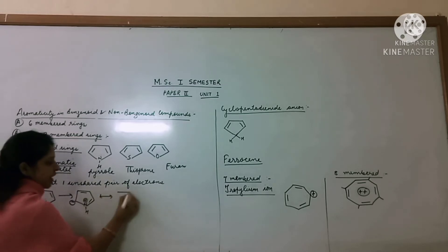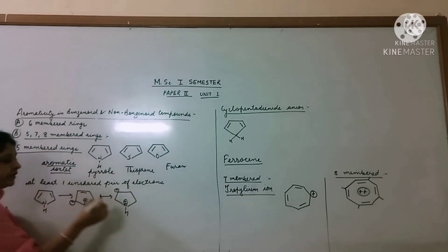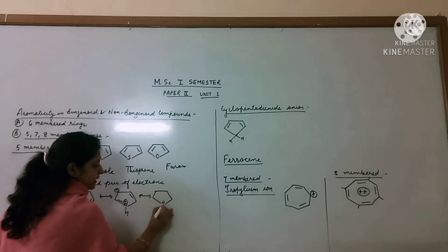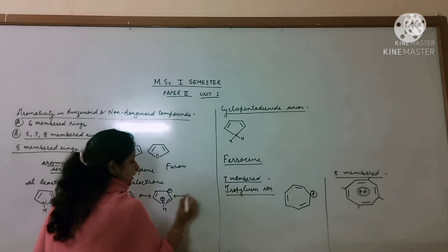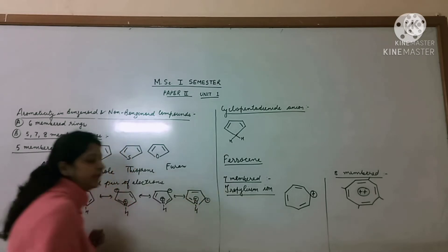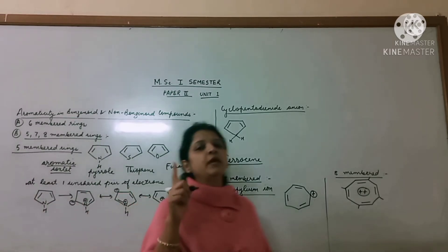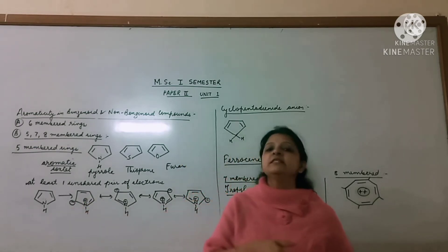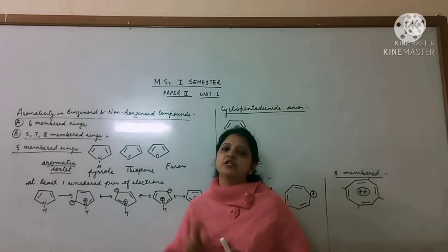This negative charge will be circulated and delocalized in the whole ring, shown through canonical resonating structures. In this way the negative charge is delocalized. Now there is an aromatic sextet: 1, 2, 3, 4 pi electrons, and this negative charge pair — six electrons of the aromatic sextet in these molecules. In this way you can also draw the thiophene and furan resonating structures.